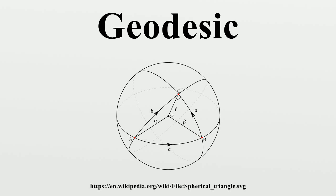The local existence and uniqueness theorem for geodesics states that geodesics on a smooth manifold with an affine connection exist and are unique. More precisely, for any point P in M and for any vector V in T_P(M) there exists a unique geodesic, where I is a maximal open interval in ℝ containing zero. In general, I may not be all of ℝ, as for example for an open disk in ℝ². The proof of this theorem follows from the theory of ordinary differential equations, by noticing that the geodesic equation is a second-order ODE. Existence and uniqueness then follow from the Picard-Lindelöf theorem for solutions with prescribed initial conditions. The geodesic gamma depends smoothly on both P and V.